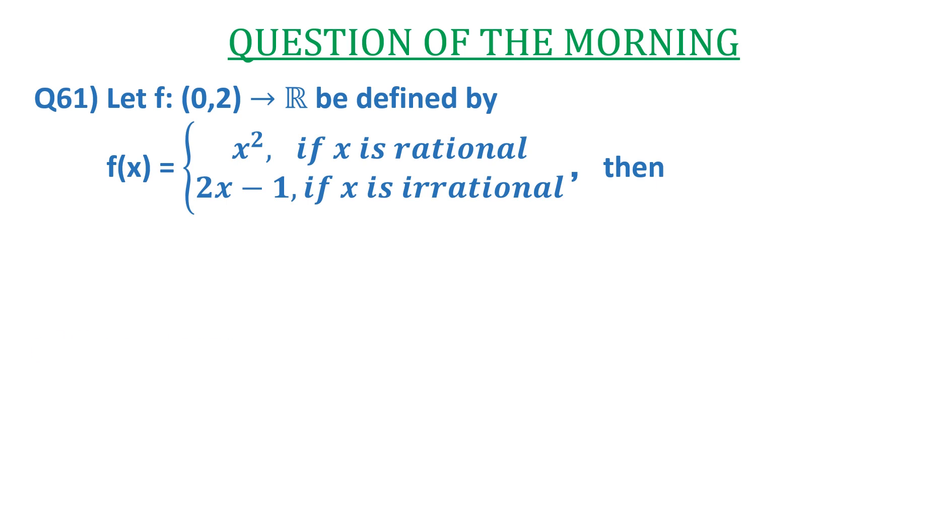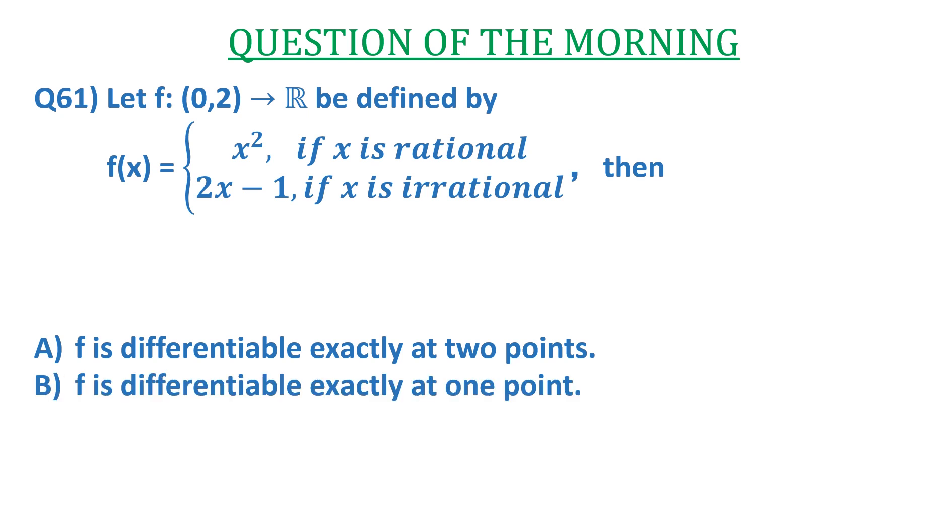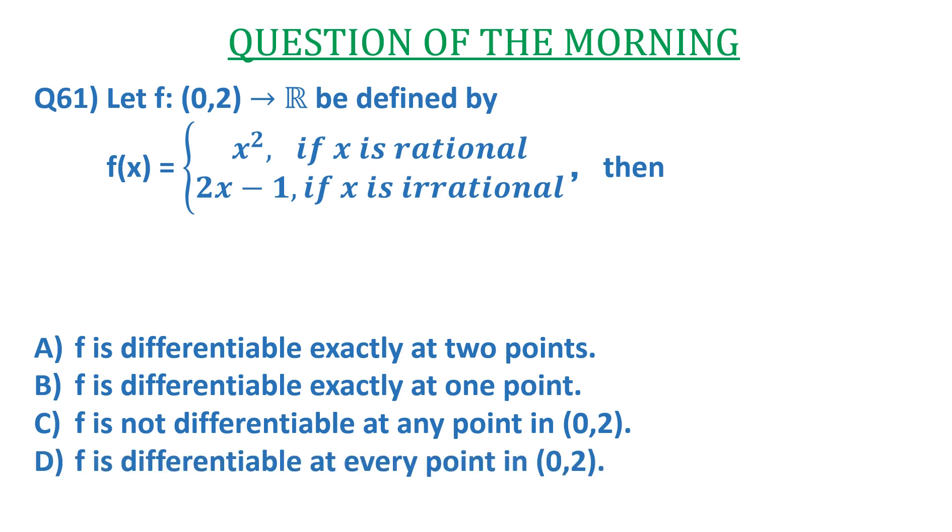Then the options are: A) f is differentiable exactly at two points. B) f is differentiable exactly at one point. C) f is not differentiable at any point in the interval (0,2). D) f is differentiable at every point in the interval (0,2).